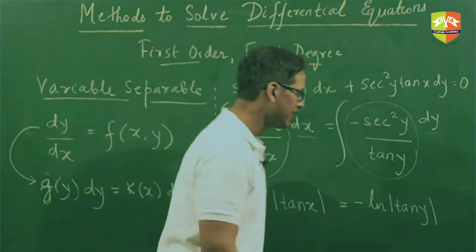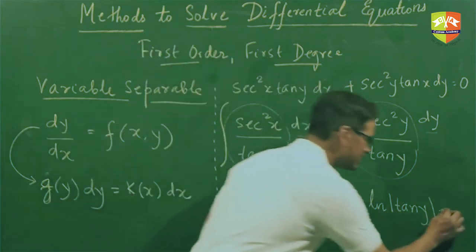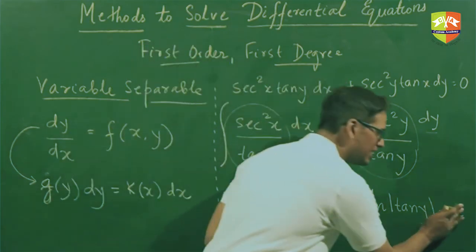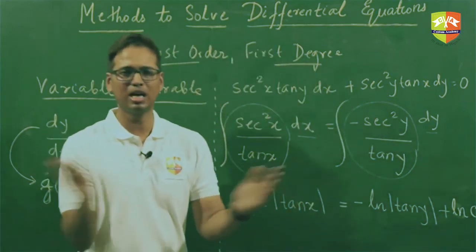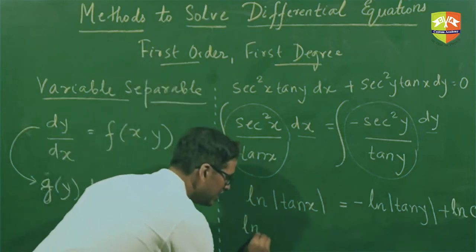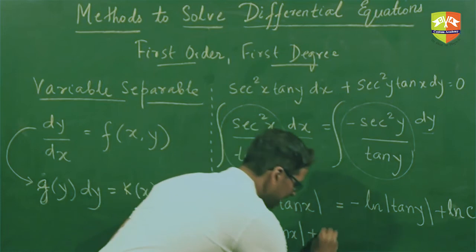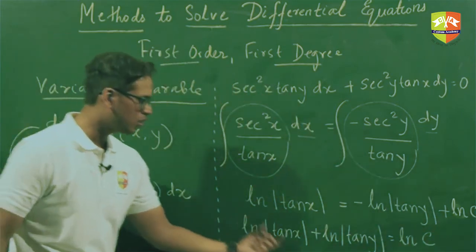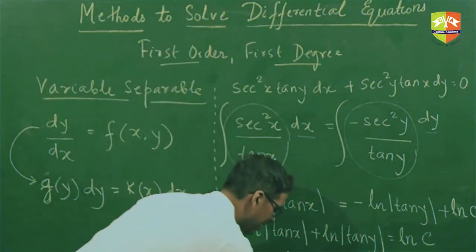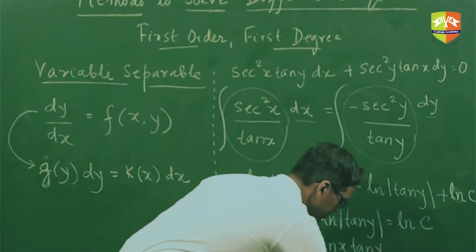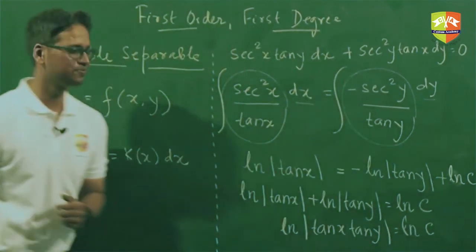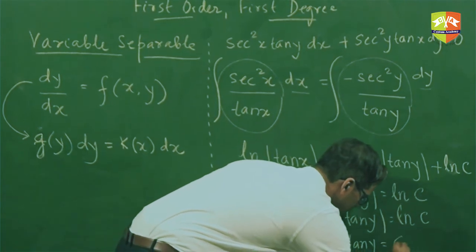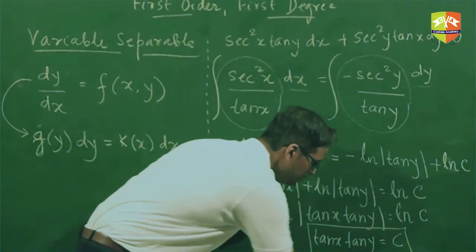It's normal practice to write the constant c as ln(c) since all terms here involve logarithms — this facilitates clubbing all the terms together. Bringing terms to one side gives ln|tan(x)| + ln|tan(y)| = ln(c). Using the log property log(a) + log(b) = log(ab), we get ln|tan(x) tan(y)| = ln(c).